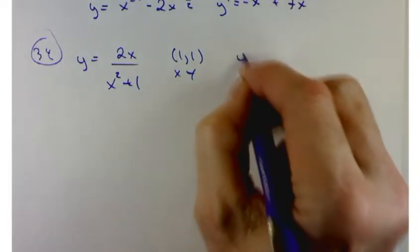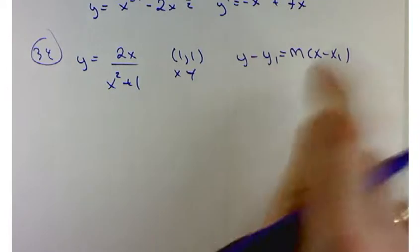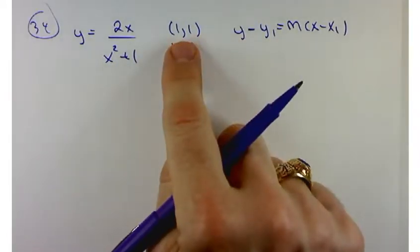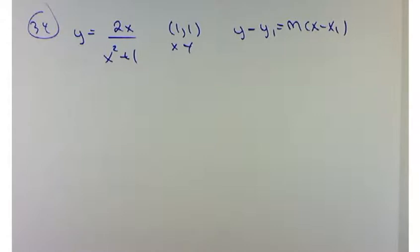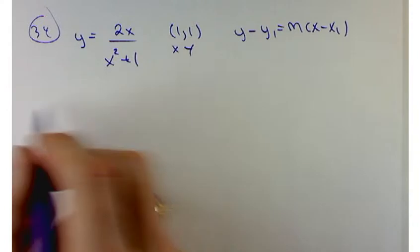But what we do need to find the equation of the tangent line is the slope. So, how are we going to find the slope of the tangent line at this point? The derivative. Thank you, Haley. I want to find the derivative here. So, that's going to be another quotient rule type problem.